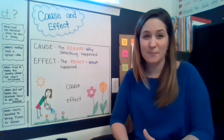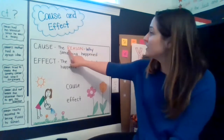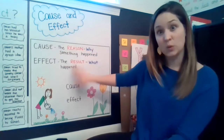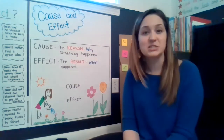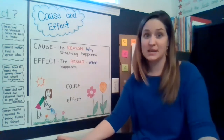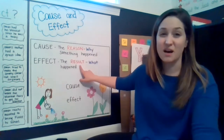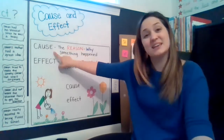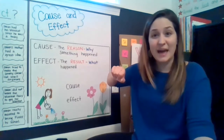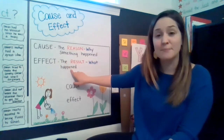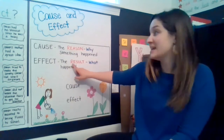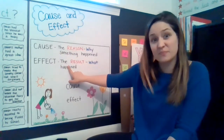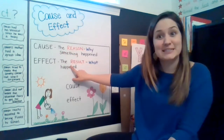Each of those things that happened have to do with cause and effect. The cause is the reason why something happened and the effect is the result — what actually happens. Mac ran and chased the ball — that was the result, that was the effect. The thing that caused him to chase the ball was that I threw it. The other thing that happened is that Mac sat on the deck — that was the effect. The reason he did that is because I asked him to. So the cause is that I asked him to sit, the effect is that he sat down. The cause is that I threw the ball, the effect is that he chased it.